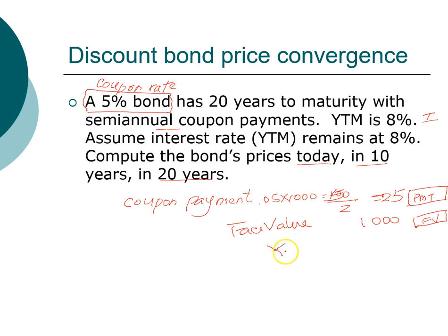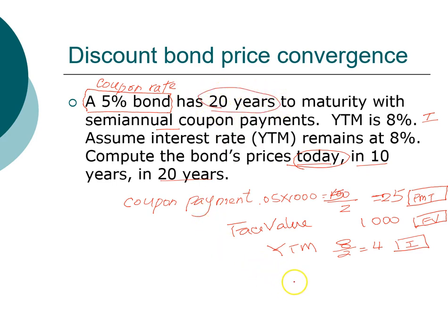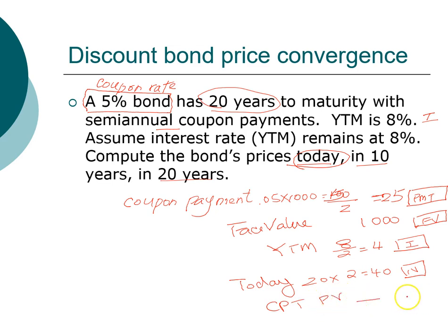The interest rate is the yield to maturity, staying at 8% per year. Since we get paid twice per year, that's 4% every six months as our discount rate. What changes over time is the duration. Today, with 20 years to maturity, ann equals 40 periods (20 years × 2). Compute the price today, the price in 10 years, and the price in 20 years.